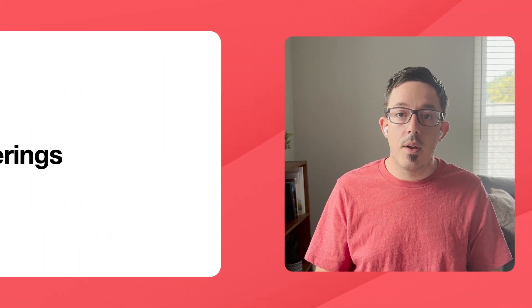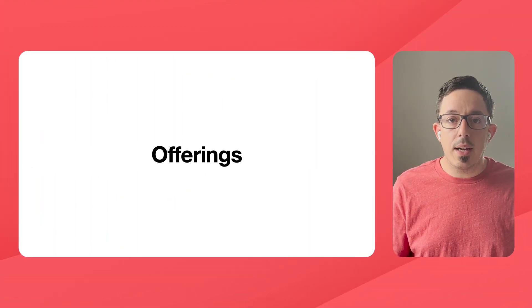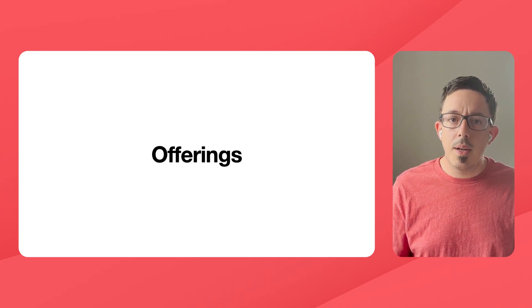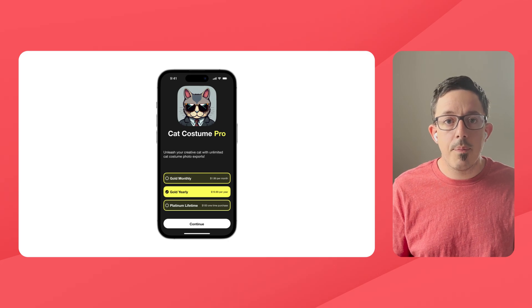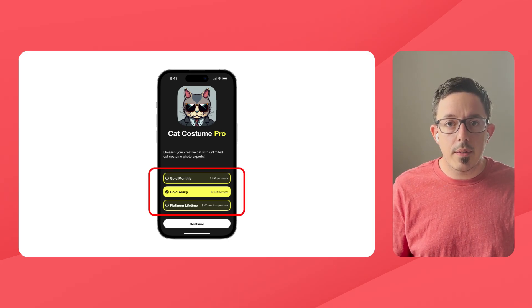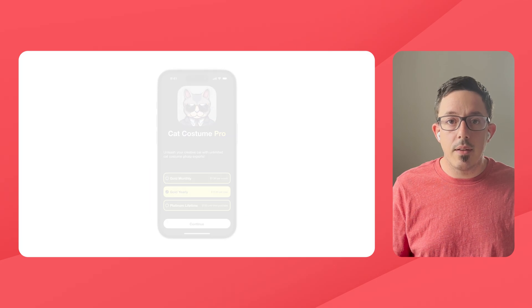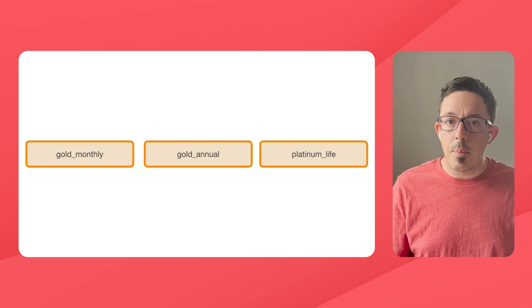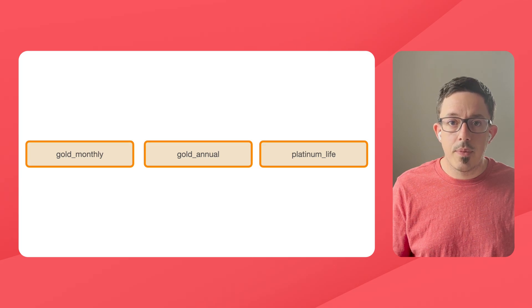So now we have our products set up in each store and mapped to RevenueCat entitlements to make it easier to check in our code. But there's one more RevenueCat concept that unlocks some really powerful features: offerings. An offering is a collection of products that you offer to your customers on a paywall — it pretty much maps directly to a single user-facing paywall. Except a single offering represents all the different platforms, so we can't put Google Play Store or Stripe products directly in here. This is where the sneaky fourth RevenueCat object comes into play.